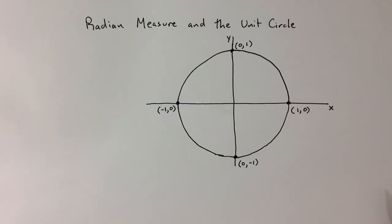Let's talk about radian measure and the unit circle. As the name suggests, the unit circle is a circle centered at the origin with a radius of one unit.